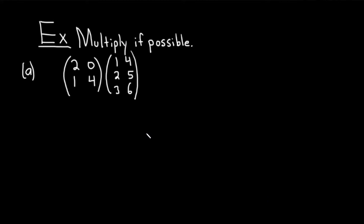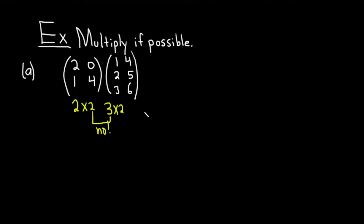The directions say to multiply if possible. Let's look at part A, where we have the matrix with entries 2, 0, 1, 4 times a matrix with entries 1, 4, 2, 5, and 3, 6. First, we have to see if it's possible by looking at the dimensions of both matrices. The first matrix has two rows and two columns, so it's a 2 by 2 — that's rows by columns. The second matrix has three rows and two columns, so it's a 3 by 2. You look at these inside numbers, the 2 and the 3. If they're different, it's not possible to multiply. So it's not possible in part A — you cannot actually perform the multiplication.